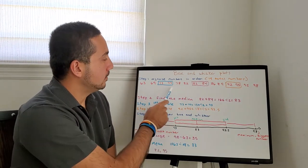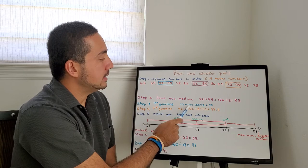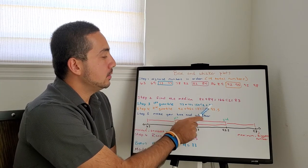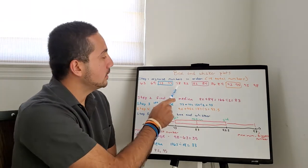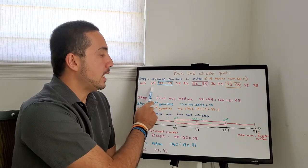Step 3, first quartile. Over here, 73 and 77, 150 divided by 2 equals 75. Remember, first quartile, middle of the lower half.